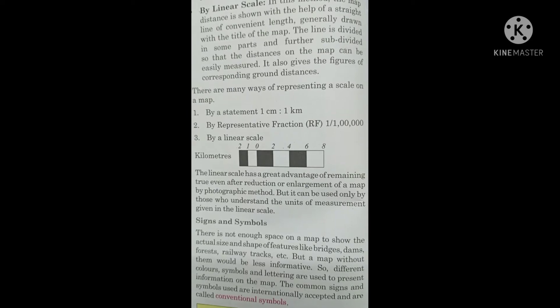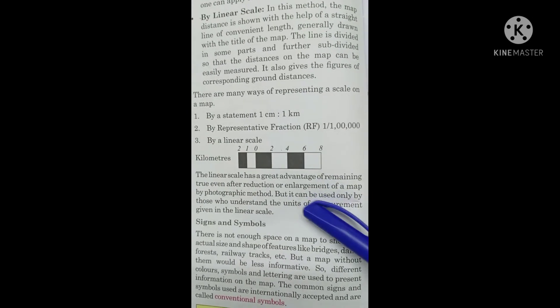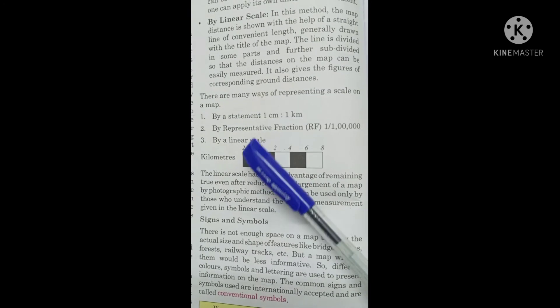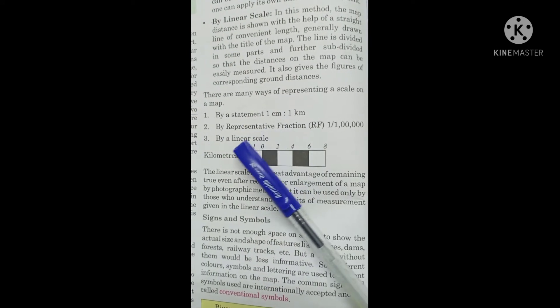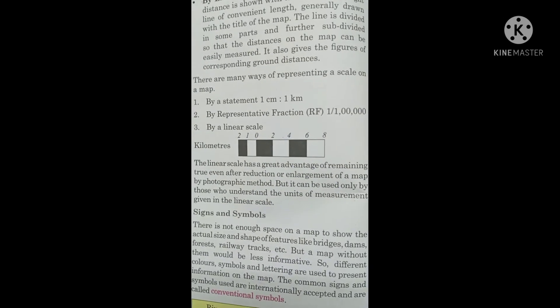Next we look at scale. Scale is the ratio between the map distance and the ground distance — that is called the scale of the map. There are three ways to represent scale on a map: by a statement, by representative fraction, and by a linear scale.